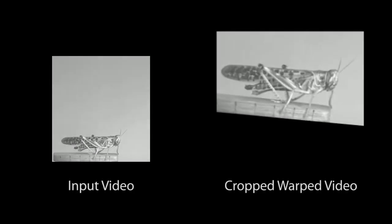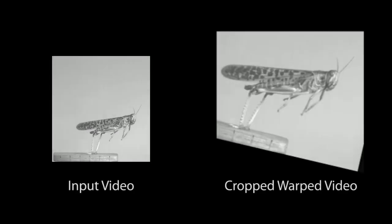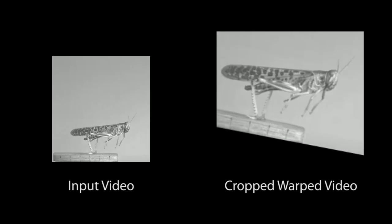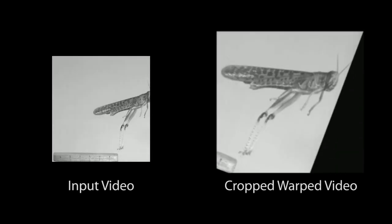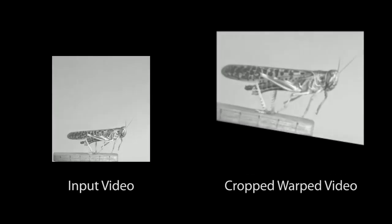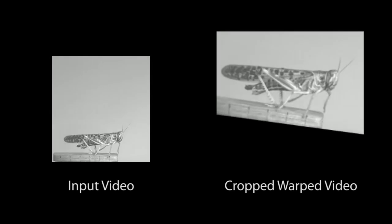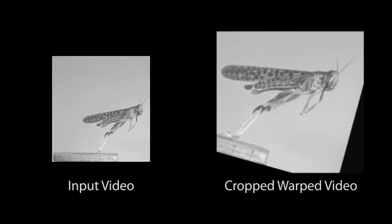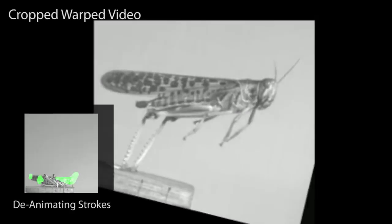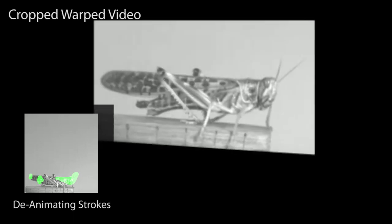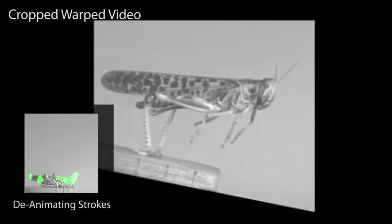Our technique can be used to create novel motion visualizations. In the input, we see a grasshopper leaping. In our output, we de-animate the body of the grasshopper so that we can better see how the legs behave during a leap. We use green strokes to immobilize the head, abdomen, and wings of the insect.